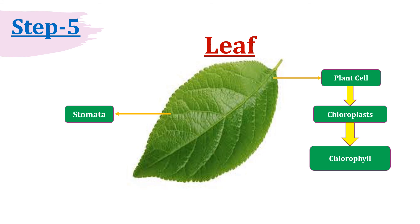So the stomata and the plant cell are completely involved in the process of photosynthesis. All the processes happen in the plant leaf. We have now completed the photosynthesis process in five steps. Please comment in the comment box about how you feel about this video, and if you like it, please like, share, and subscribe to my channel.